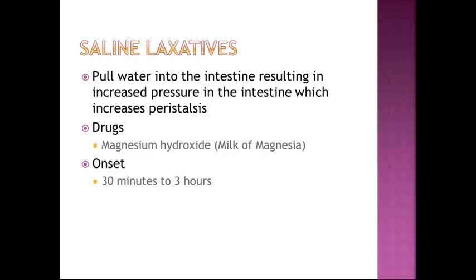Saline laxatives pull water into the intestine, resulting in increased intestinal pressure, which increases peristalsis. The main drug is milk of magnesia or magnesium hydroxide. The onset is usually 30 minutes to three hours, so this has a much shorter onset — if you need an effect right away, this would probably be the drug of choice.